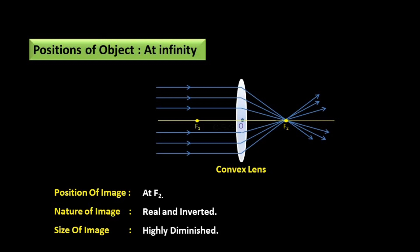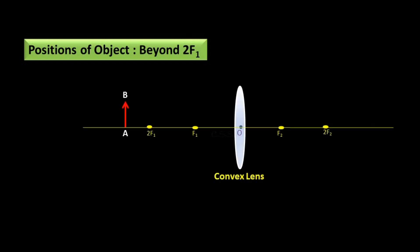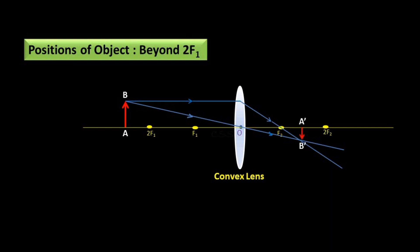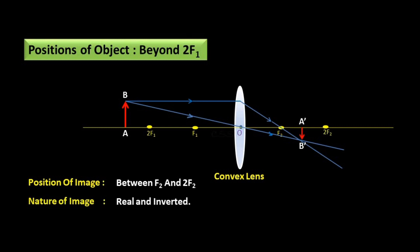Second position: object beyond 2F1. AB is the object. The first incident ray is parallel to the principal axis and passes through focus F2. The second incident ray passes through the optical center without any deviation. These two refracted rays cross each other at a single point — the position of image A'B' is between F2 and 2F2. Nature of image: real and inverted. Size of image: smaller than object.